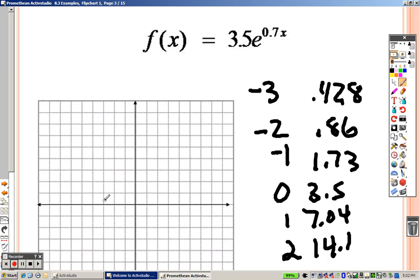Negative 3 and .4, negative 2 and .8, negative 1 and 1.7, we'll just say it's there, 0 and 3.5 is right there.